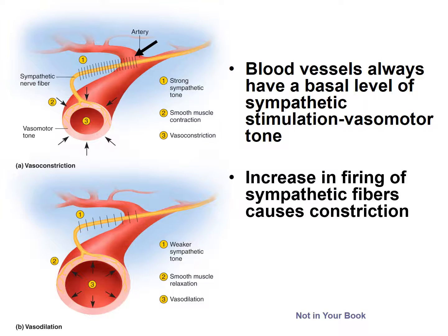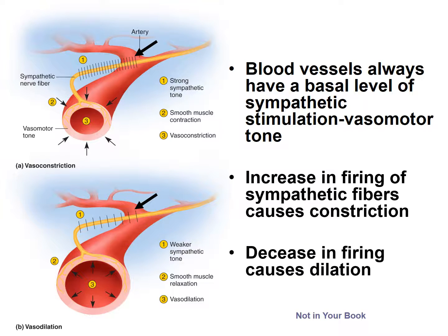On the other hand, if there was a desire to decrease blood pressure or to increase blood flow to an organ, there could be a decrease in the rate at which action potentials are sent down those sympathetic fibers. That would cause the smooth muscles to relax — they'd still be contracting, but not as much — and you would get vasodilation of those blood vessels. So you can get modulation in the activity of an organ even though only one subsystem is controlling it.